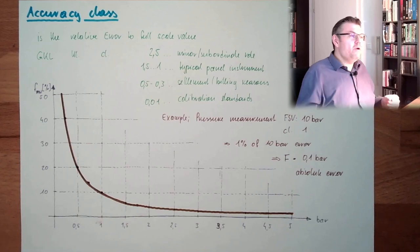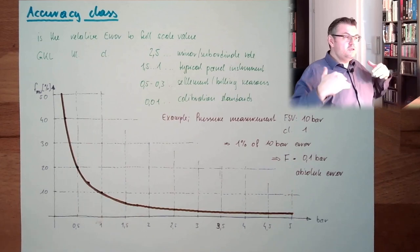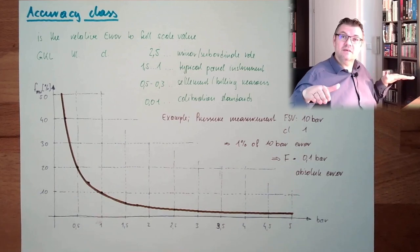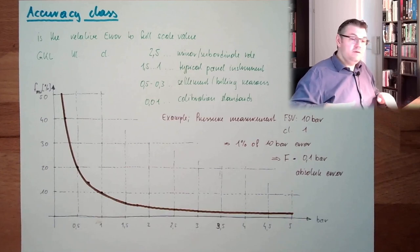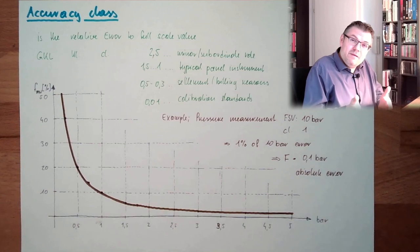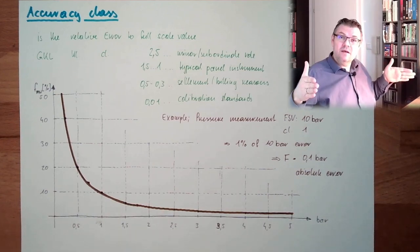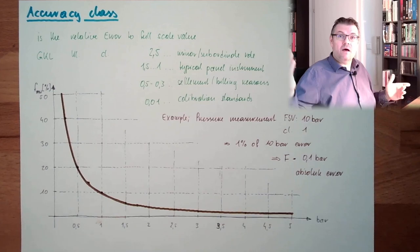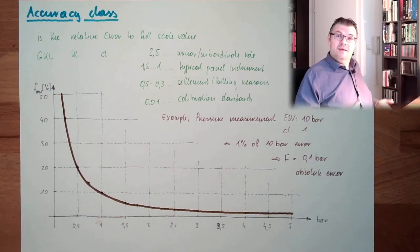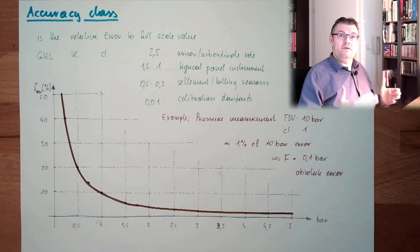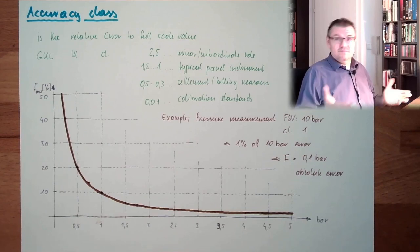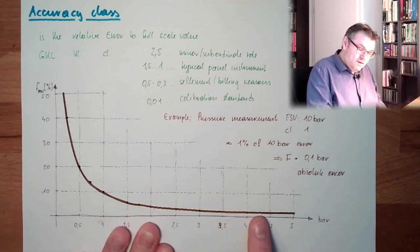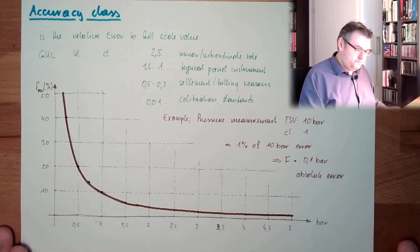If I want to measure the room temperature, which is around 22 degrees or something like this, I'm not going to use a measurement device where the full-scale value is 3000. Because if I measure 3000, then 10 degrees up or down doesn't really matter. But if in the room is 20 or 30 degrees, it does matter. So then I'm using a measurement device where the full-scale value is somewhere around 40, 50. Because then we are somewhere here, where the error is already acceptable.